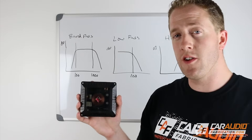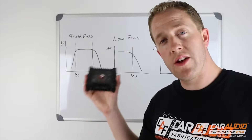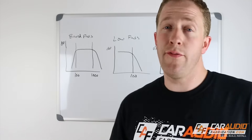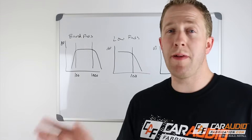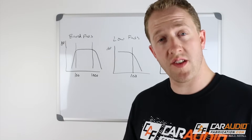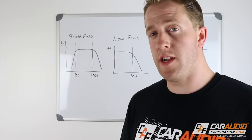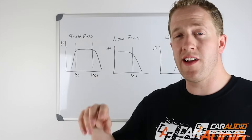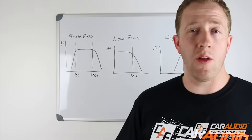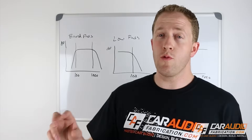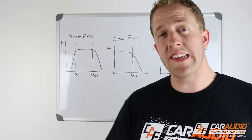Most of the time passive crossovers are included with component speakers to limit the frequencies going to the mid-range speaker and tweeter. The advantage of a passive crossover is they're easy to use if you don't really know what you're doing, and they prevent you from potentially damaging your speakers. The disadvantage is passive crossovers will eat up a little bit of the power going to your speaker. Another disadvantage is they're most of the time designed to be used in a specific configuration — for example, with the mid-range and tweeter located right next to each other — which may not match your install.